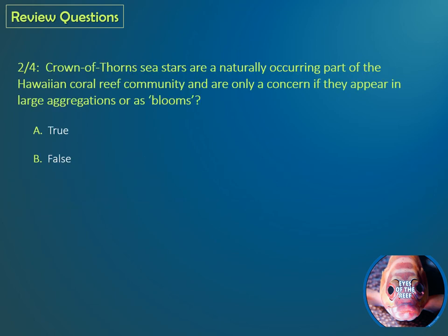Question two: Crown of Thorns Seastars are a naturally occurring part of the Hawaiian coral reef community and are only a concern if they appear in large aggregations or as blooms. A is true and B is false. If you said A for true, you're correct.